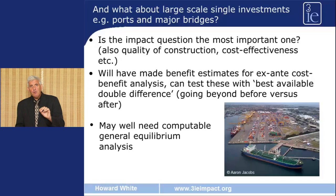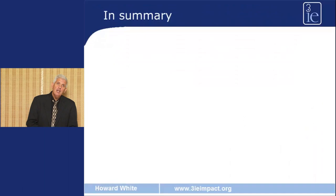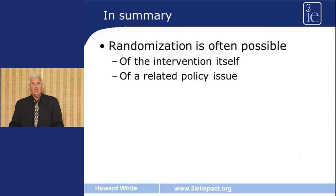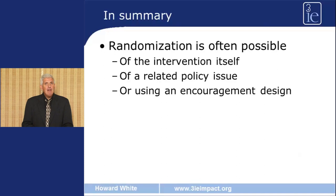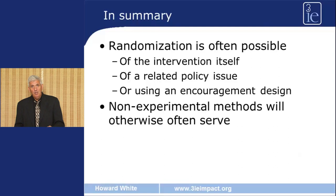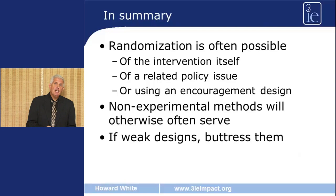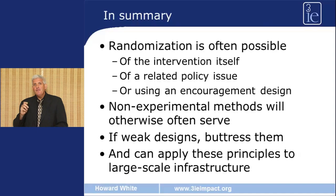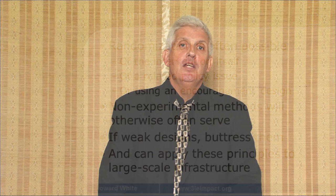In summary: randomisation is often possible — you can randomise the intervention itself, randomise analysis of a related policy issue, and use randomisation in an encouragement design. Where randomisation cannot be done, non-experimental methods are often available, though those designs may be weaker, in which case we need to buttress them through triangulation and good causal chain analysis. These same principles can be used to analyse the impact of large scale infrastructure investments. In conclusion: it is possible to do a rigorous impact evaluation of large scale and other infrastructure investments, and I hope this talk has helped your thinking in how you'll do that in your own work.